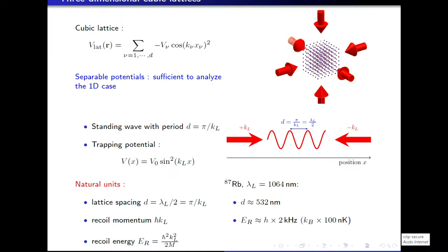Once you have one standing wave, it's easy to generalize to 3D by applying a standing wave along each direction x, y, z. This potential is separable, so at least for single-particle properties it's sufficient to analyze the 1D case and then deduce the 3D result by multiplication. The natural units from the problem are: lattice spacing D = λ_L/2 = π/K_L; recoil momentum ℏK_L, the momentum of one photon forming the wave; and recoil energy E_r = ℏ²K_L²/2m, the kinetic energy of an atom with this momentum. Typical values are a few hundred nanometers for lattice spacing and E_r in the order of one to two kilohertz for regular atomic species.